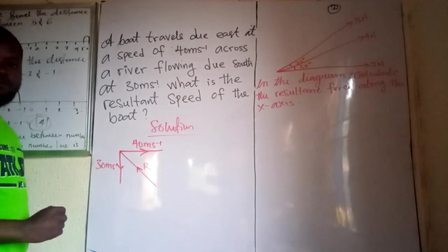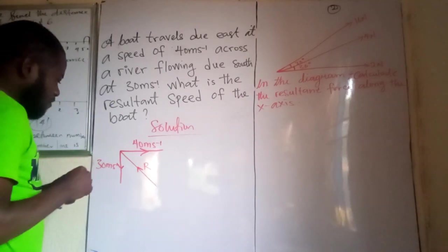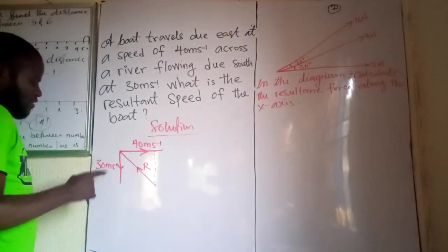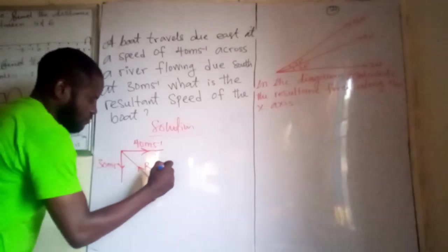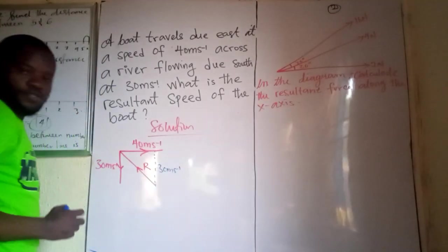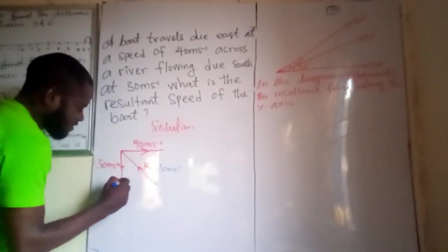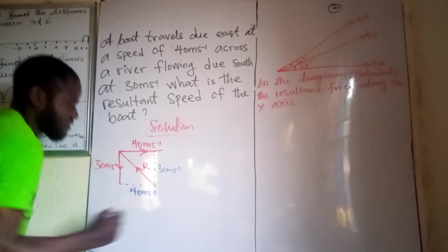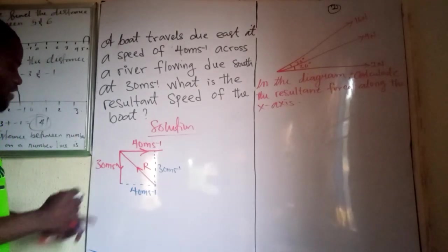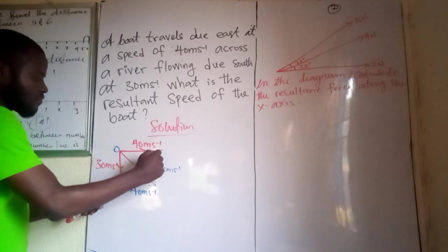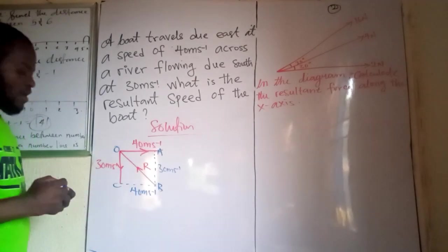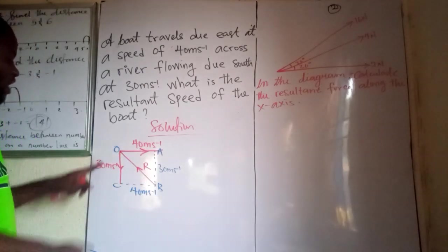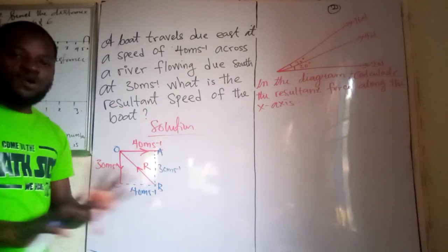So this is R. Now, you will agree with me that this side like this is equivalent to this. So here is also 30 meters per second. And this side will be descending as this, which is also 40 meters per second. Now, if I label this triangle O, A, B and C. So I can consider any of the two.